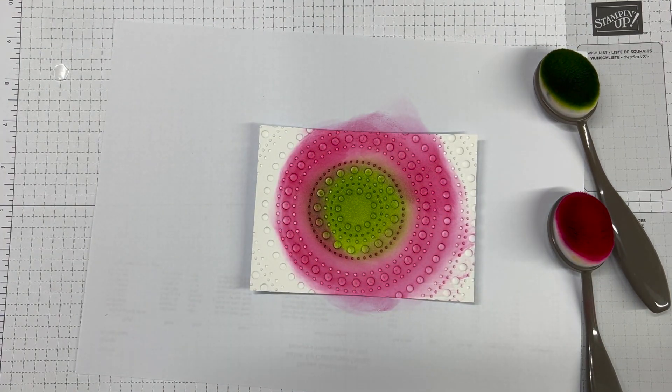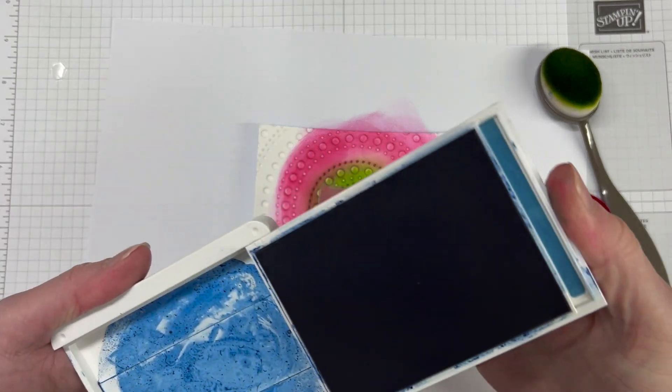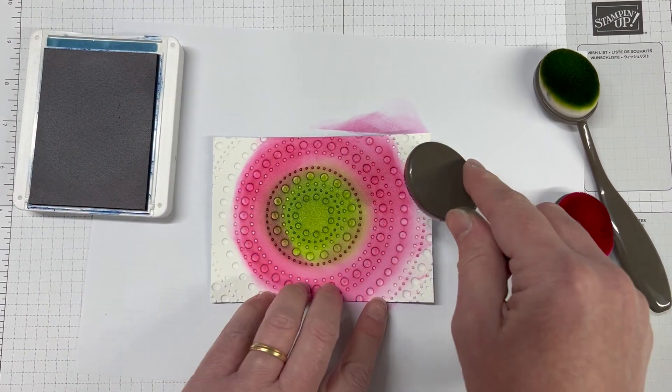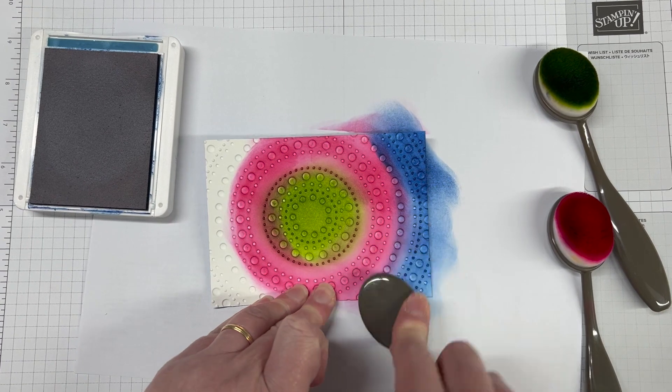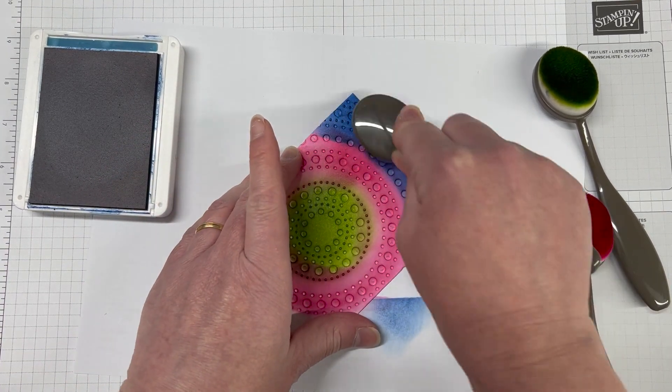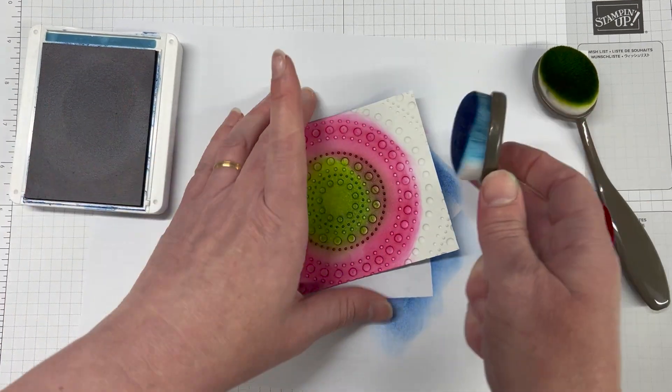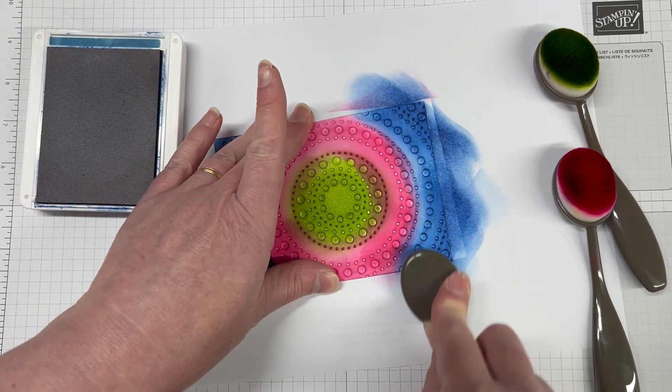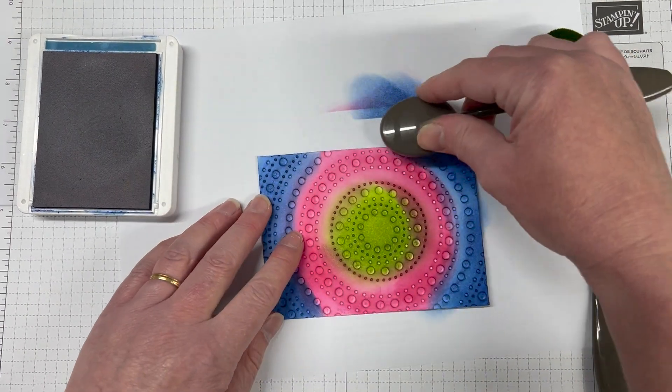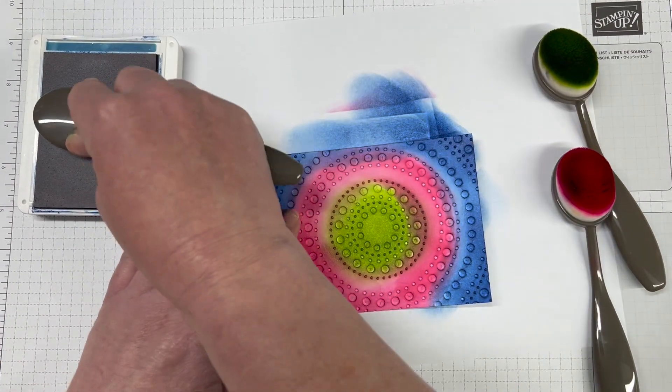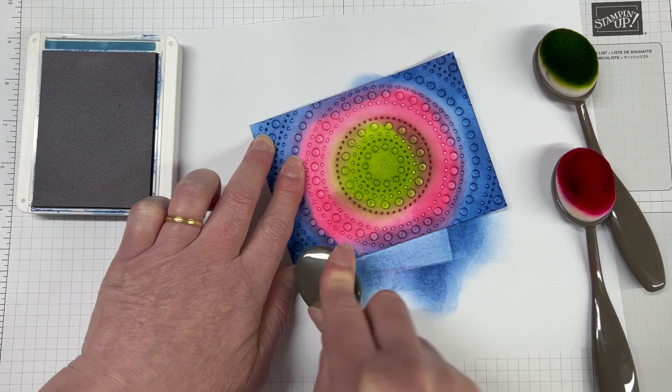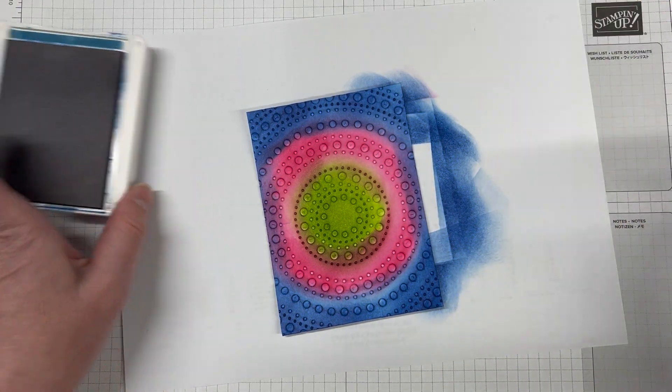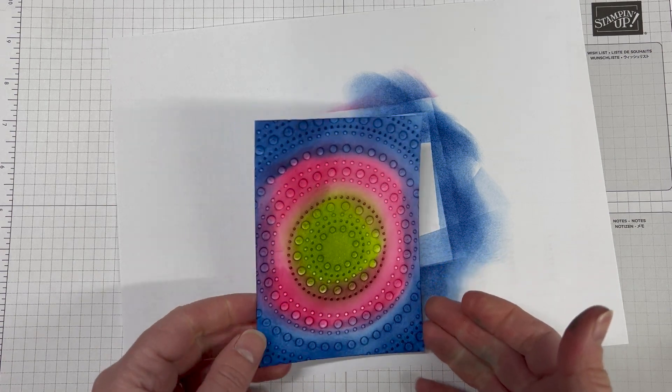The more colours you use, the more colourful it will be. The brighter the inks, the more it's going to stand out with the black as well. That's why I went with really bright, vibrant colours of Melon Mumbo, Granny Apple Green and Blueberry Bushel. I'm just adding the colours in. You want to make sure you're not overlapping the colours too much, because that's going to muddy them a little bit.